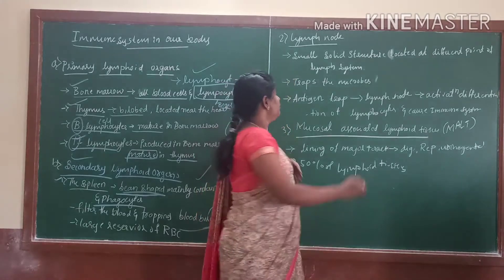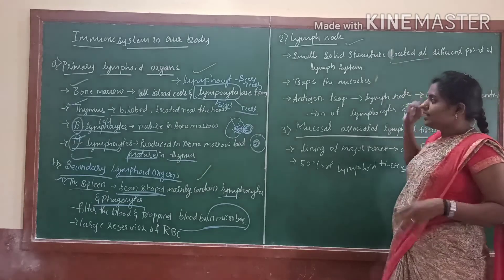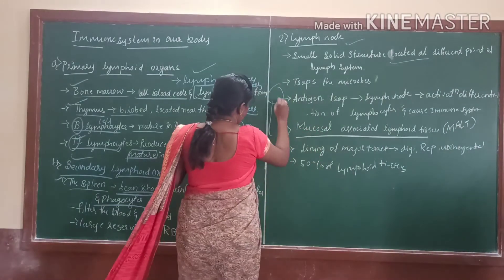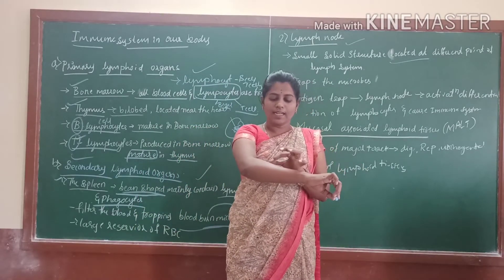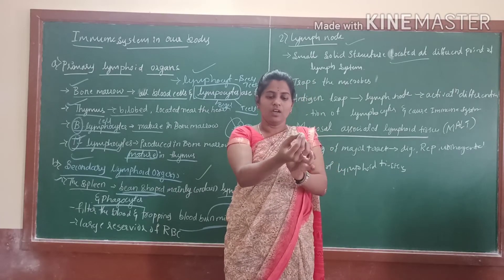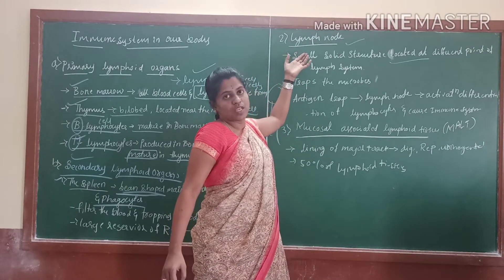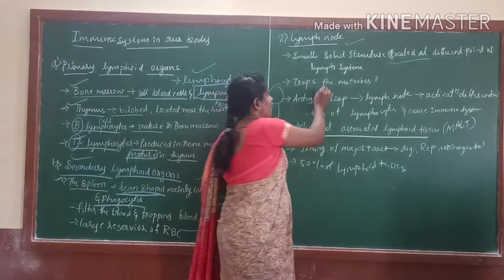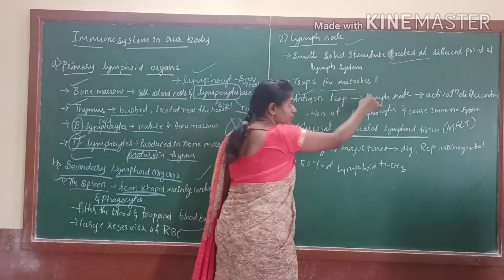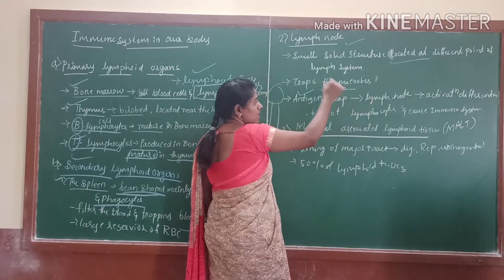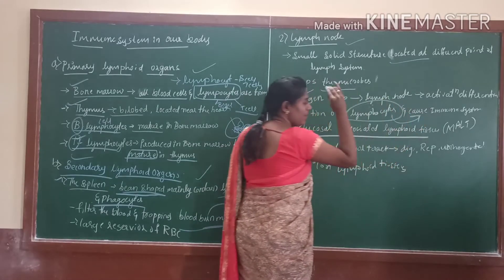Next one is lymph nodes. Lymph nodes are nothing but these are small solid structures which are located at different parts of the body. In the lymphatic system, some nodes are present. In that node only the lymph nodes are present, and they trap the microbes. The main function is to trap the antigen. After trapping, it goes for lymph nodes, which activates and differentiates the lymphocytic cells. After that, the immune system will be activated.